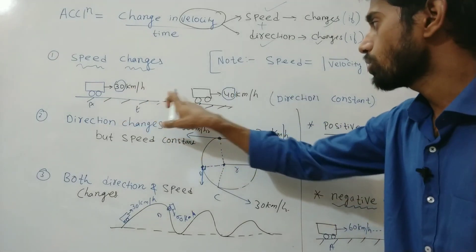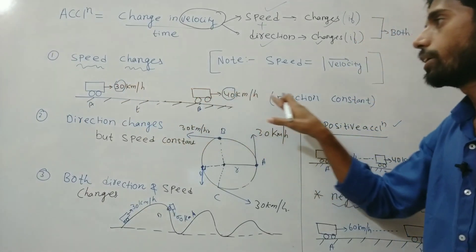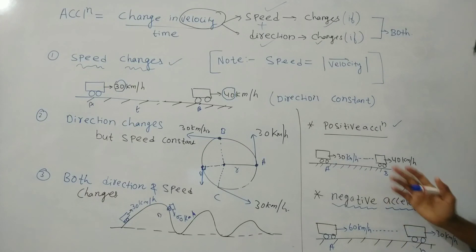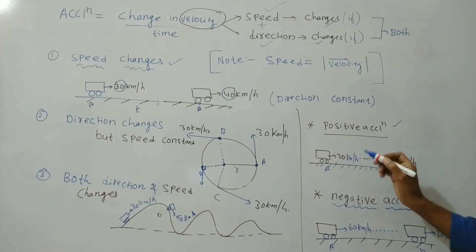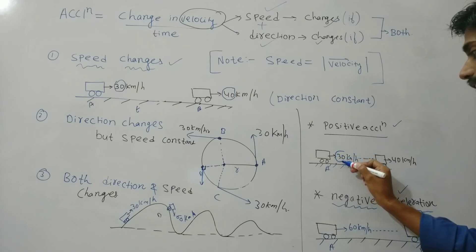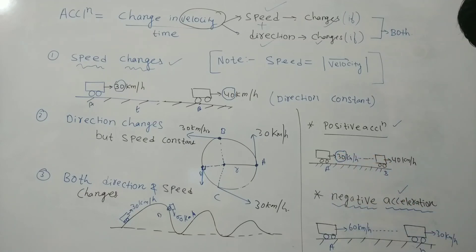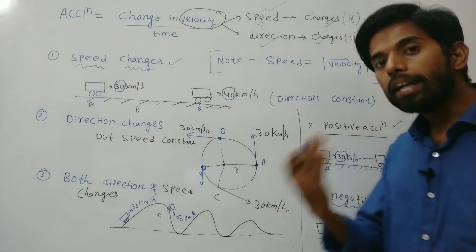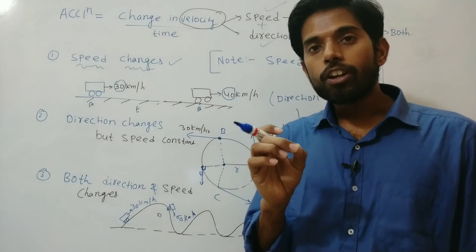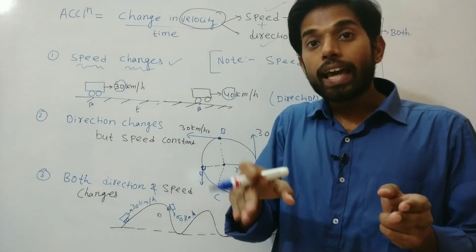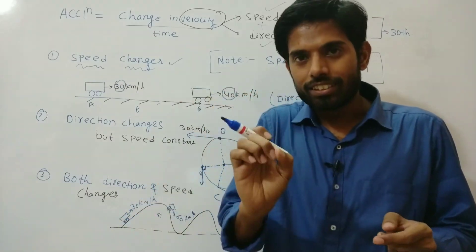What do you mean by positive acceleration? Here the direction is constant — the body is moving along a straight path — so only speed is changing. If the body gains speed: for example, speed is 30 km/h and after time t it becomes 40 km/h, there is an increment in speed. Velocity is speed along with direction — direction never increases, but speed will increase.